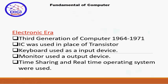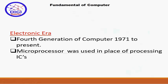Third generation میں time sharing and real-time operating systems استعمال ہوئے۔ پہلے batch processing ہوتی تھی لیکن اس generation میں time sharing کی basis پر processing کی جاتی تھی۔ اس کے بعد fourth generation of the computers آتا ہے جس کا time period 1971 سے present تک کا ہے۔ اس generation میں microprocessor آئی، جس نے third generation کی ICs کو replace کیا۔